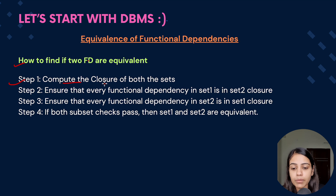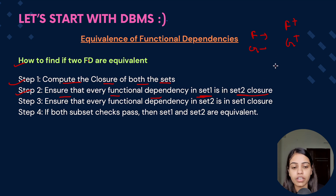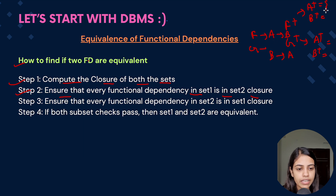Here are the steps to find if two functional dependency sets are equivalent. Step 1: compute the closure of both sets — find all attribute closures present in F and G. Step 2: ensure that every functional dependency in set F is in the closure of set G. For example, if F has A→B and G has B→A, we find the closures: in F, A+ = {A, B} and B+ = {B}; in G, A+ = {A} and B+ = {B, A}.